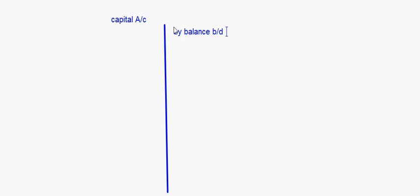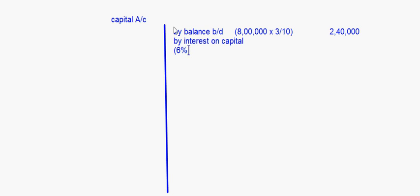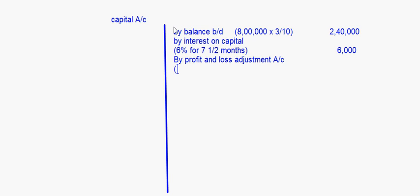Let's put down the items on the credit side first. By balance brought down — the opening balance is eight lakhs, so eight lakhs into her profit sharing ratio 3/10 comes to two lakh forty thousand. Interest on capital at six percent for seven and a half months on the capital comes to six thousand. Then by profit and loss adjustment account — that is profit up to the date of death, which we calculated as seventy six thousand four hundred and six.